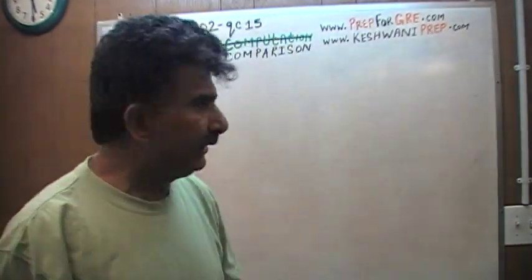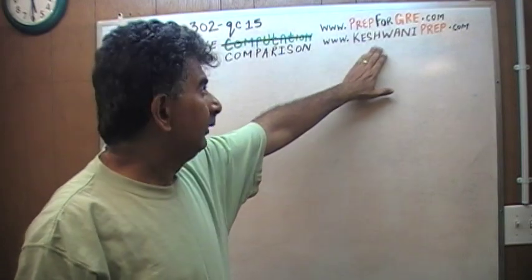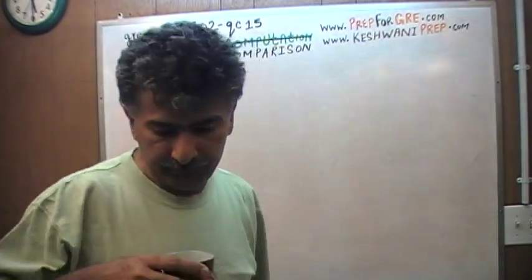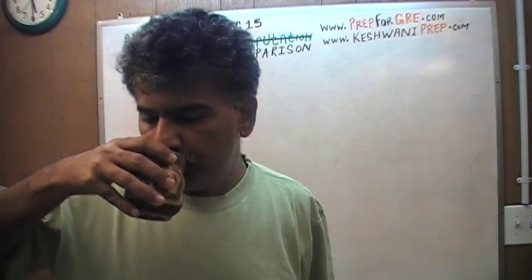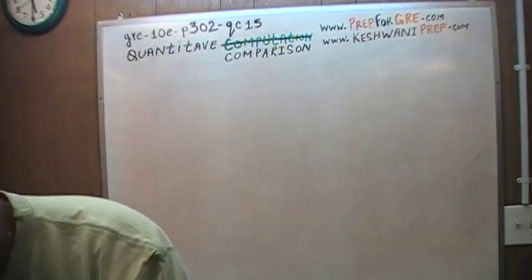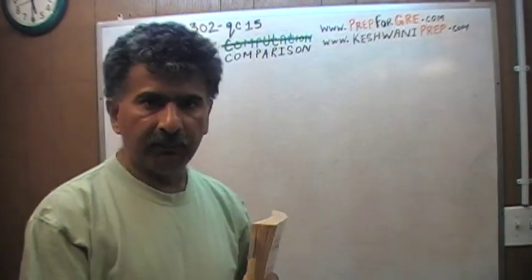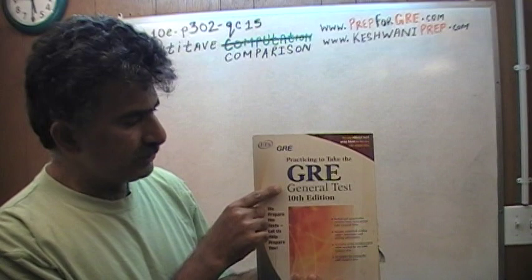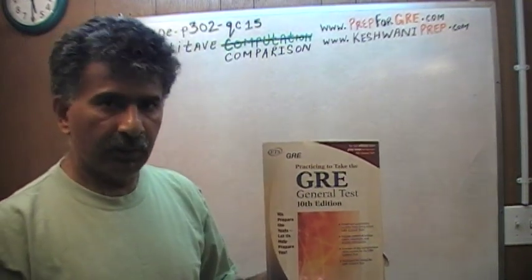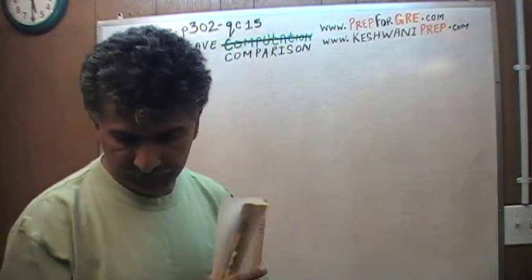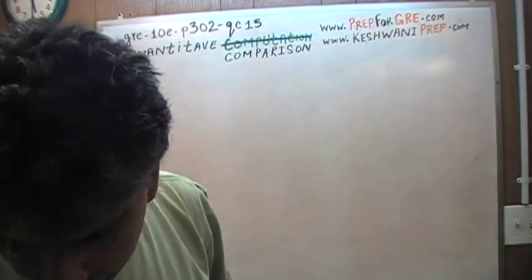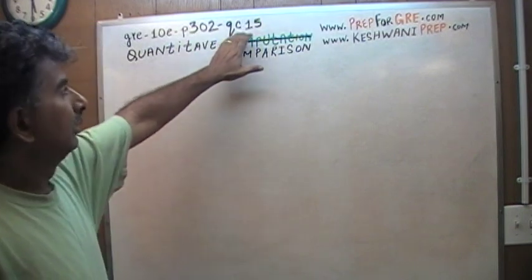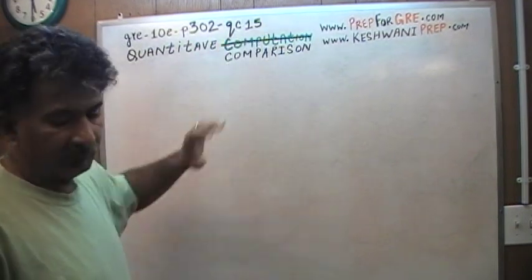Hello, my name is Keshwani — that's K-E-S-H-W-A-N-I, Keshwani. I have been solving math problems for GRE out of this book, practicing to take the GRE General Test, 10th edition. If you do not own this book already, purchase one immediately. The problem I'm about to solve is on page 302, quantitative comparison question number 15.